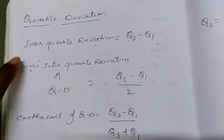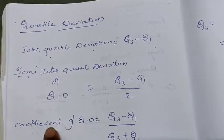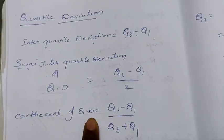In quartile deviation, totally we have three: inter-quartile deviation, semi-inter-quartile deviation or quartile deviation, and coefficient of quartile deviation.